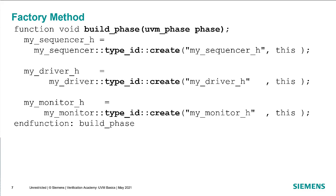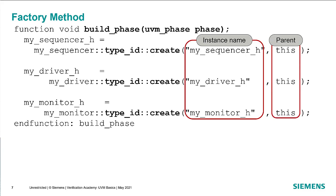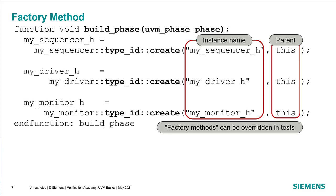In the build phase, rather than constructing the sequencer, driver, and monitor directly, we use what we call factory methods. Just understand that you specify the type of the object you want to create — in this case my sequencer — using type_id::create. That is a way of calling the factory method to create an instance of the my sequencer type. The arguments are the same as the constructor: you provide a string for the instance name and this as the parent. These components are going to be built as children of the my agent component. We use the same pattern for my driver and my monitor — type_id::create with an instance name and the parent. That allows us to build a hierarchical name for every instance of every component in the system. The reason we use factory methods is it allows the type of object actually created to be overridden in the tests, and we'll talk more about this in a future session.